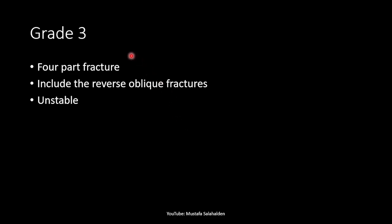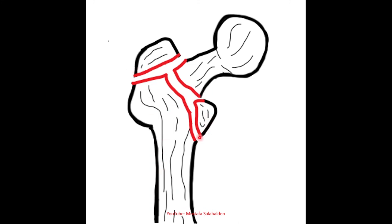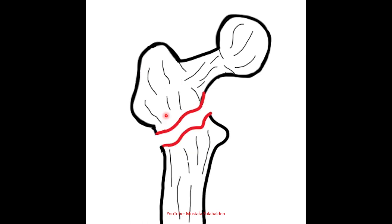In grade three there is a four-part fracture, which includes the reverse oblique fractures, and it is considered unstable in general. The reverse oblique pattern is considered unstable because the adductor muscles pull the femur medially, making the fracture highly unstable.